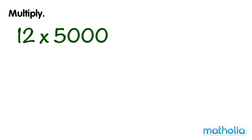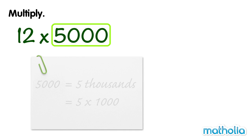Multiply 12 by 5,000. 5,000 is equal to 5 thousands, which we can write as 5 times 1,000.